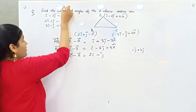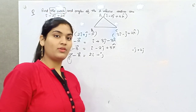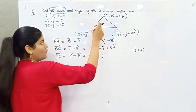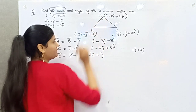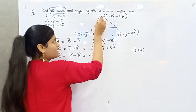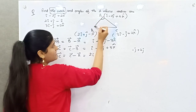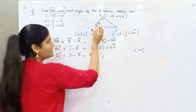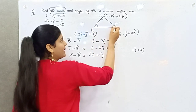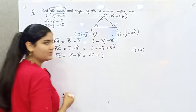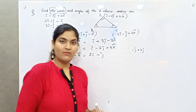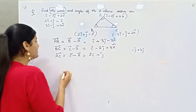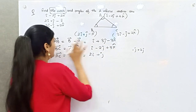You have the first part — finding the sides of the triangle. Secondly, you have to find out the angles. For angle A, you consider the two adjacent sides AB and AC. For angle B, consider AB and BC. For angle C, consider AC and BC. To find out any angle, you use direction cosines.